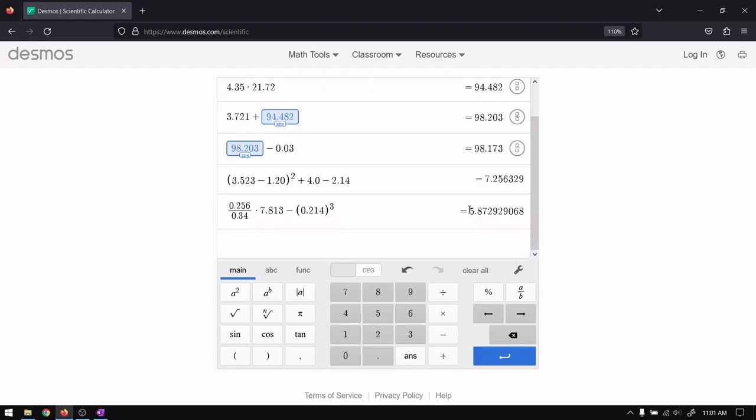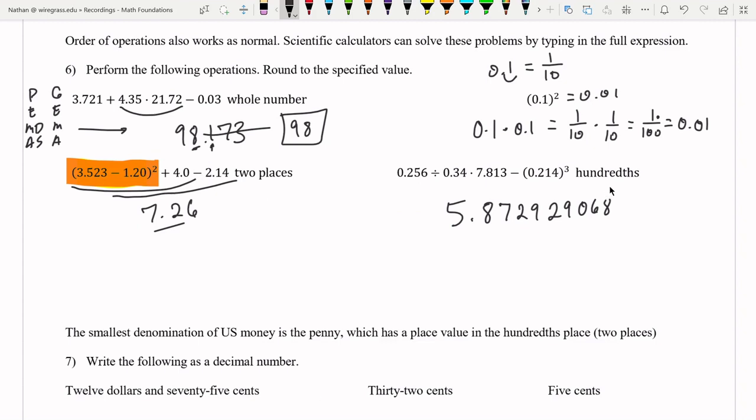Okay. Let's look at the next one. We have our answer is 5.872929068. Okay. And it says round to the nearest hundredth. That's of course, the same thing as two places past the decimal. That's our testing digit. It's not five or greater. So we're not going to round up. We can just drop the rest of it. We're going to get 5.87 is our solution.